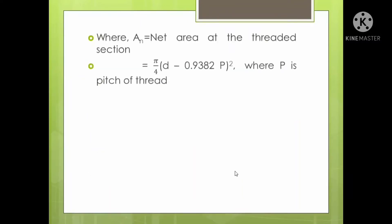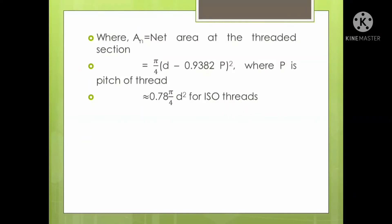If the bolts are threaded rods, the net area is calculated using the threaded rod equation, where P is the pitch of the thread. You can round off the above equation as 0.7 × (π/4) × T² for ISO threads.